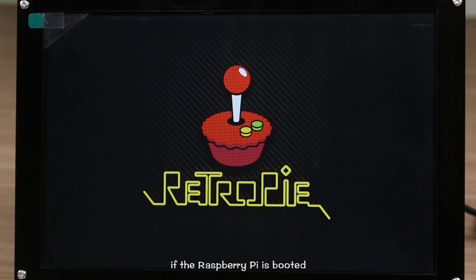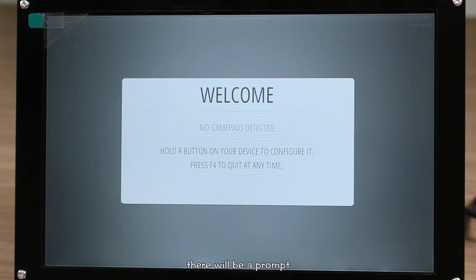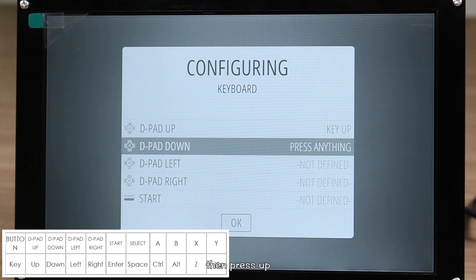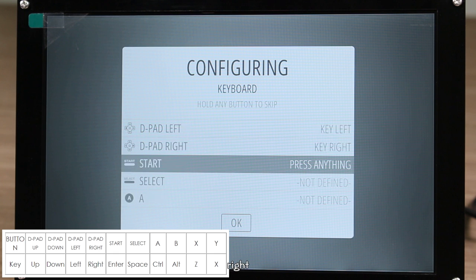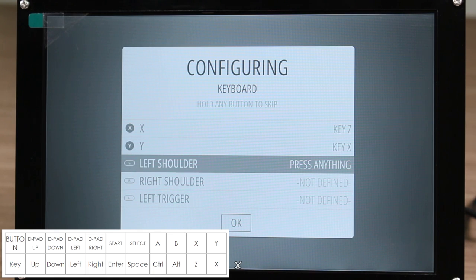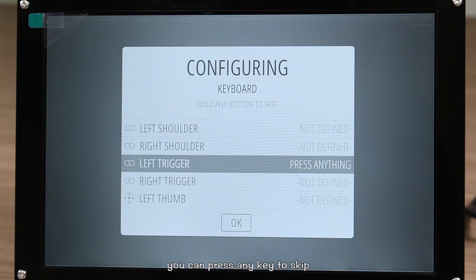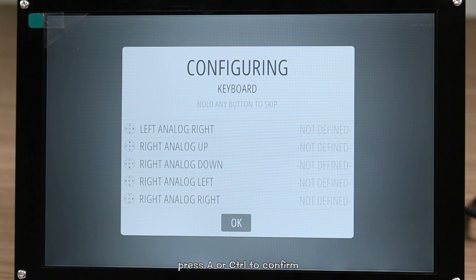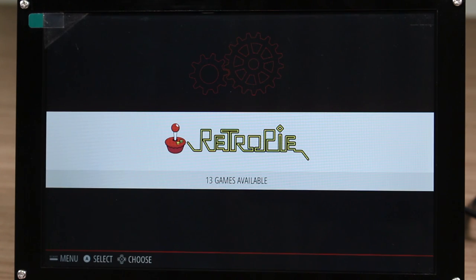If the Raspberry Pi is booted for the first time, there will be a prompt for you to set the controller. Press any key on the keyboard for more than 2 seconds. Then press up, down, left, right, enter, space, control, alt, z, x, enter, as mentioned in the booklet. As for others, you can press any key to skip. When it comes to OK, press A or Ctrl to confirm. Wait for a while and the configuration is completed.